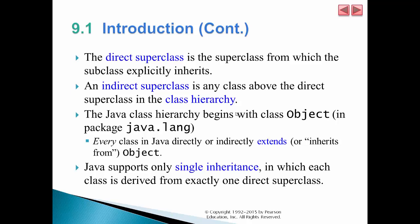So in both perspectives — static (source code) and dynamic (running program) — we can say everything is an Object in Java.